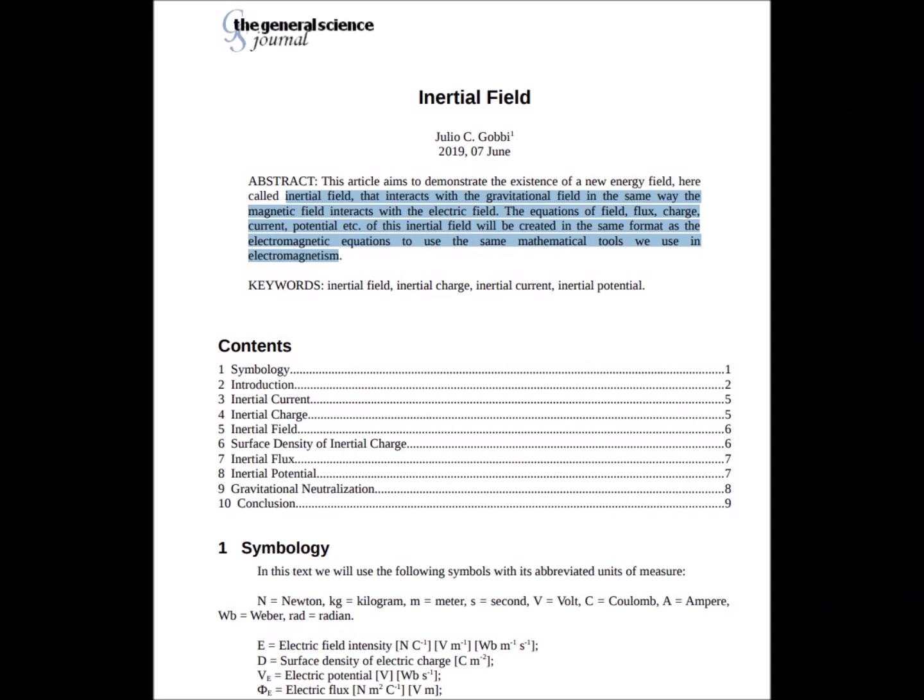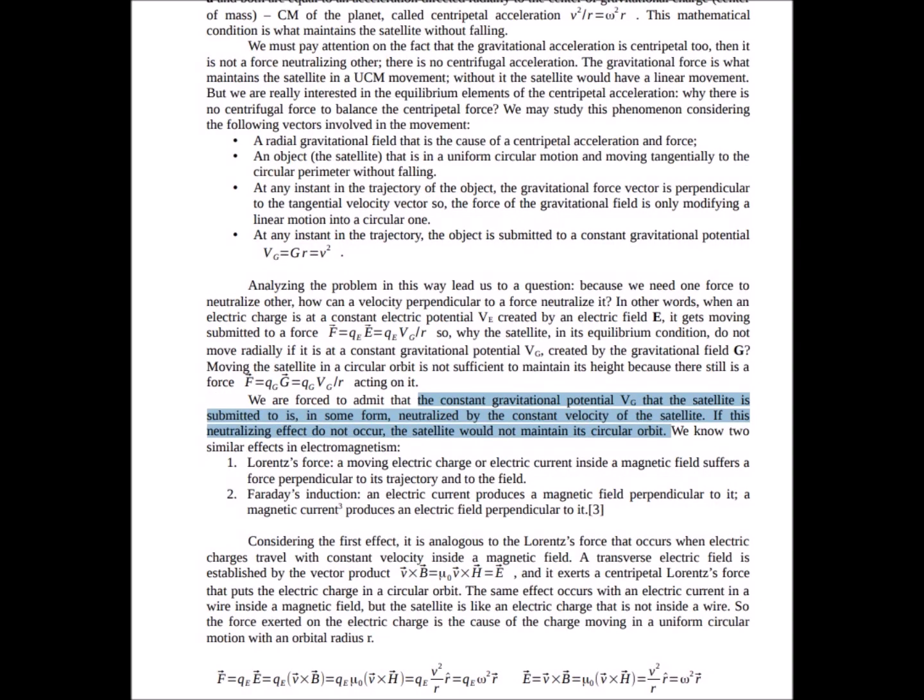In the document here a researcher by the name of Julio C. Gobi presents the idea that objects in motion actually generate inertial fields which interact with the gravitational field in much the same way that magnetic fields interact with the electric field or more specifically how moving charges can create their own magnetic fields which can then interact with an external magnetic field. He says we are forced to admit that the constant gravitational potential that the satellite is submitted to in some form is neutralized by the constant velocity of the satellite. If this neutralizing effect does not occur the satellite would not maintain its circular orbit.